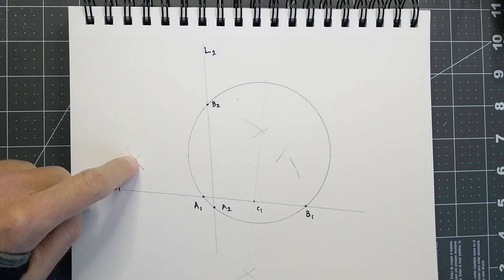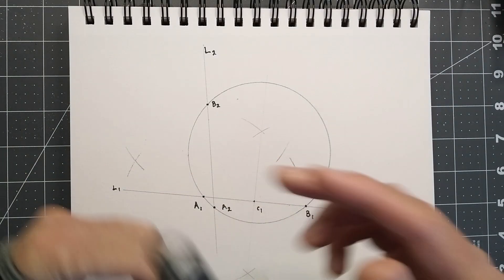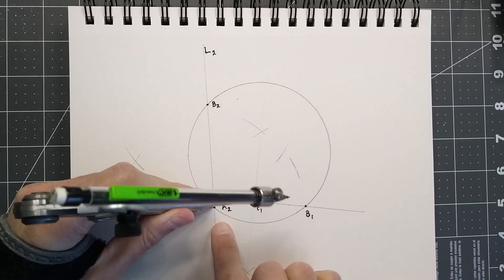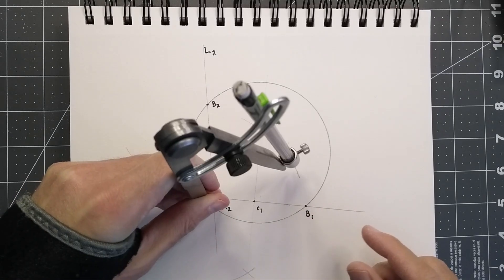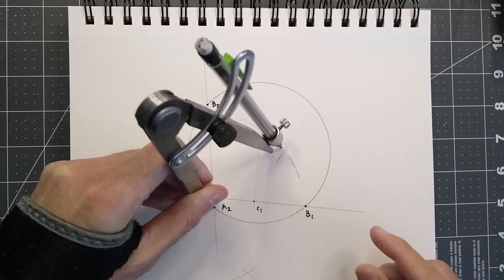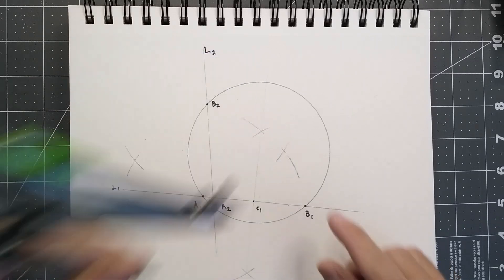But there, I crossed my point. So we didn't cross there. So let's come back to A2. Lengthen that a little. Comes right to there.